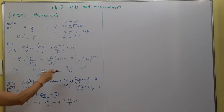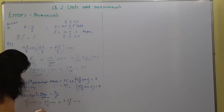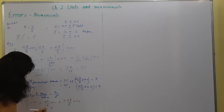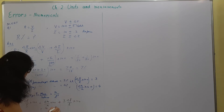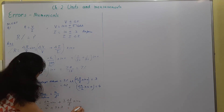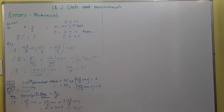Putting in the values: the mass percentage error is 4, and the length percentage error is 3, multiplied by the power of 3. So this gives us 3 times 3 plus 4, which is 9 plus 4, equal to 13 percent. This is the required answer for the given question.